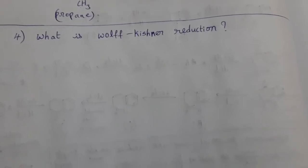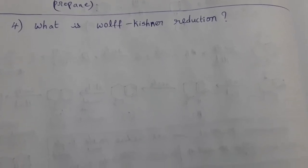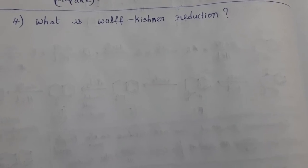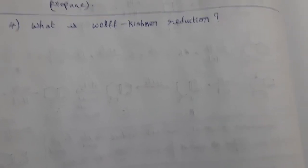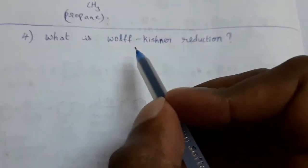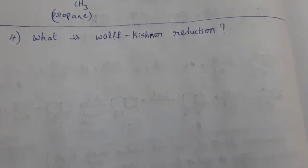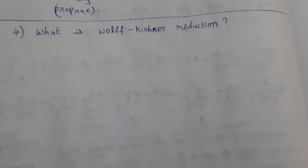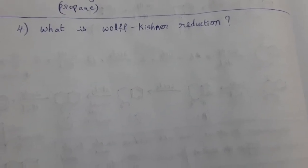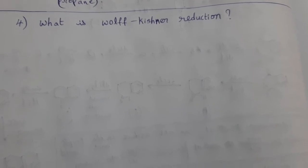Hi students, this is Viswanath, Chemistry faculty for NEET and IIT exams. In the last class we completed the mechanism of Clemmensen's reduction. Now see the next one: Wolf-Kishner reduction. This reduction is also suitable for carbonyl compounds. Carbonyl compounds undergo Wolf-Kishner reduction to form alkanes.